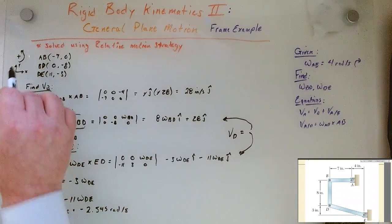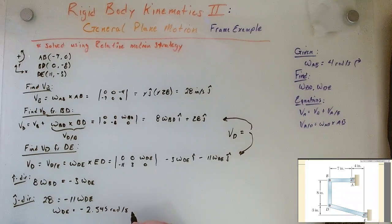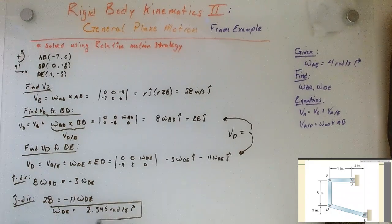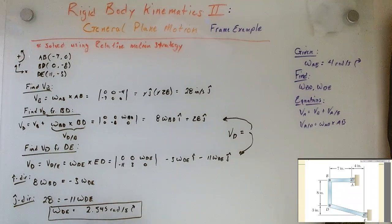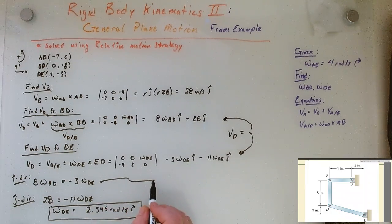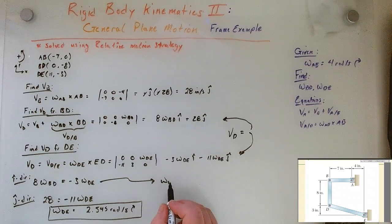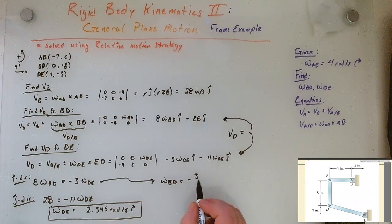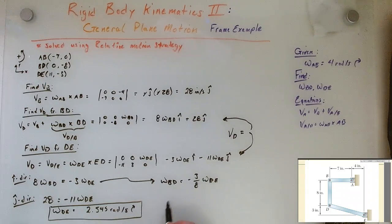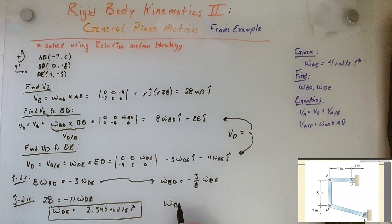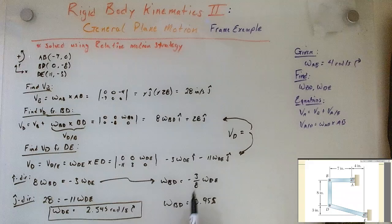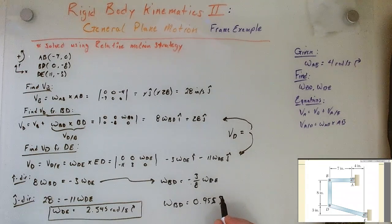So then what we can do is just substitute this into the I direction equation. And this gives us that omega BD is equal to minus three eighths of omega DE. And when we run that through the calculator, we get that omega BD is equal to 0.955 radians per second. And that's going to be in the anti-clockwise direction. So the direction we call positive now.